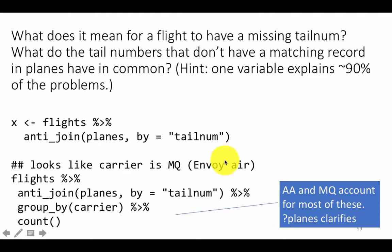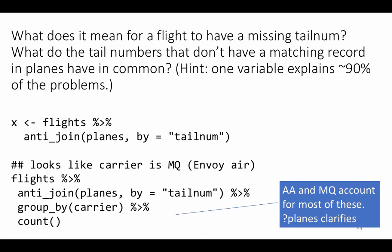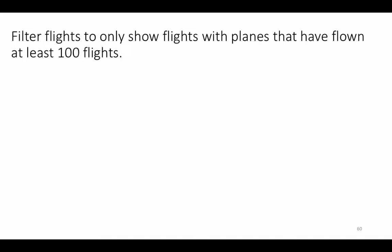If you do question mark planes and look at the details, it tells you very clearly that American Airlines and MQ — which is Envoy Air, a subsidiary and code-share partner of American Airlines — those two actually don't report their tail numbers; they report something else. That's why those tail numbers are not found in the planes table: for those particular airlines, what is reported is not the tail number.